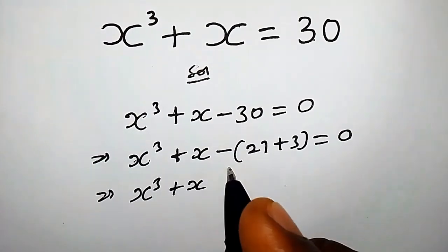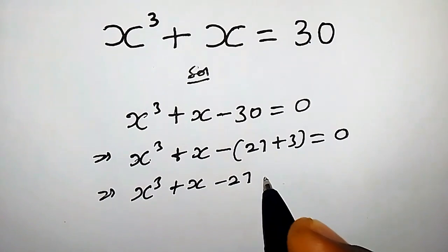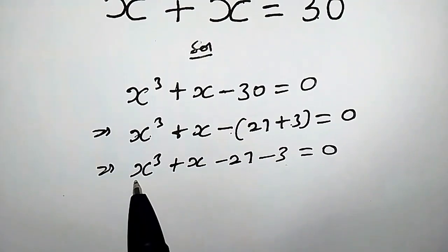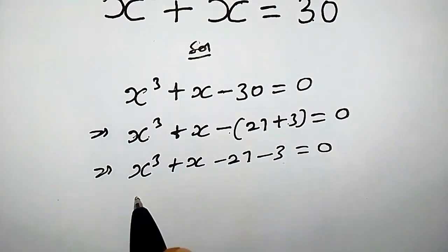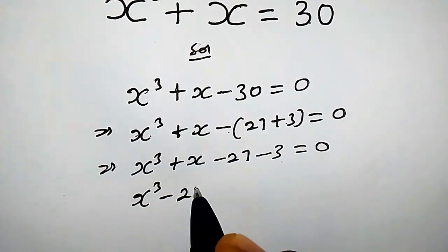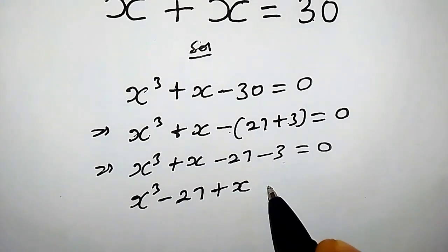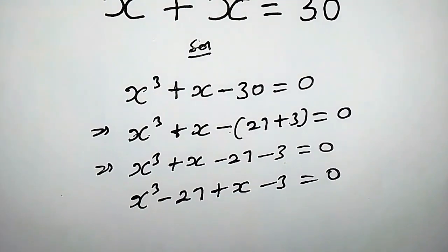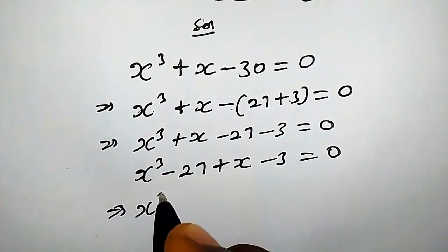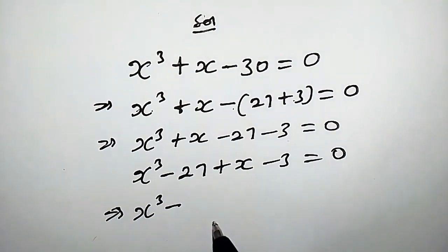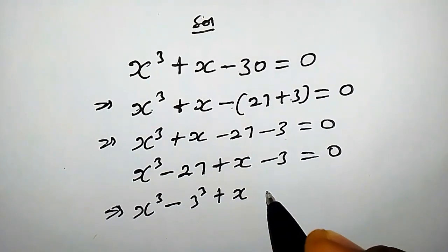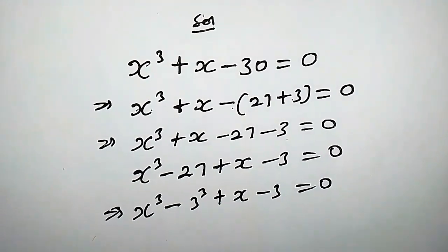Opening the bracket we have minus 27 minus 3 equals 0. Rearranging, we have x cubed minus 27 plus x minus 3 equals 0. This implies x to the power of 3 minus 27 is the same thing as 3 cubed, plus x minus 3 equals 0.